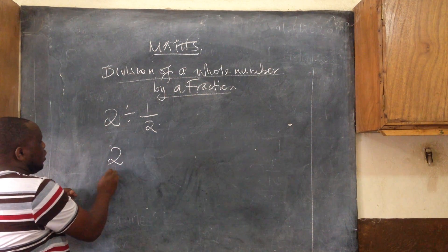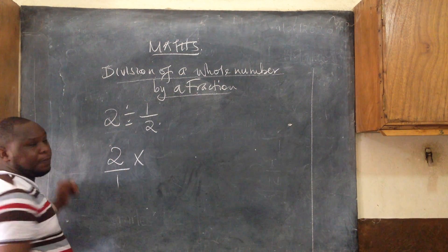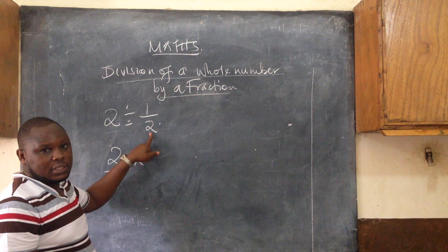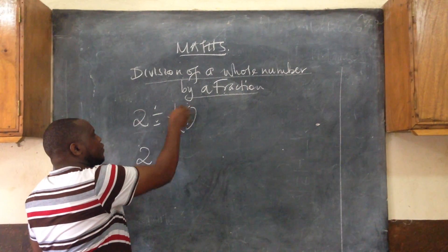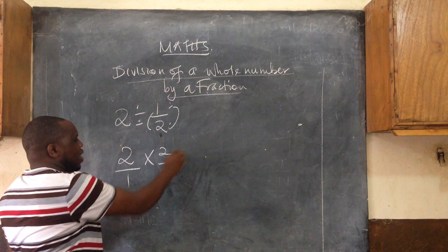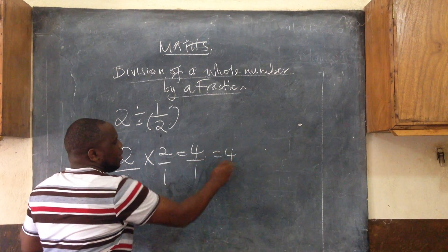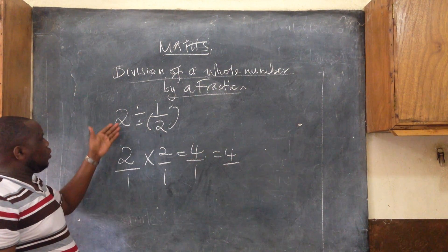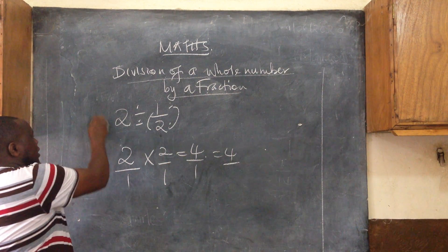You take 2, put it over 1, then this division sign changes to multiplication. The second part must also change, meaning you get the reciprocal of 1/2, which is 2 over 1. This gives you 4 over 1, which is simply 4. So 2 divided by 1/2 equals 4. That is example one.